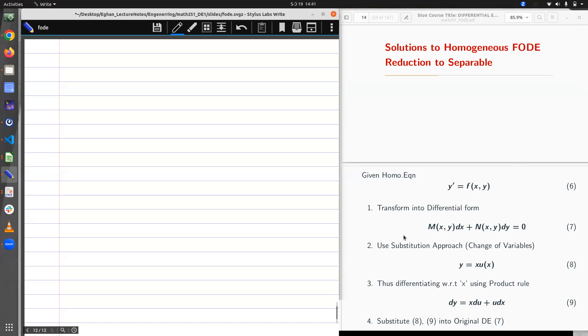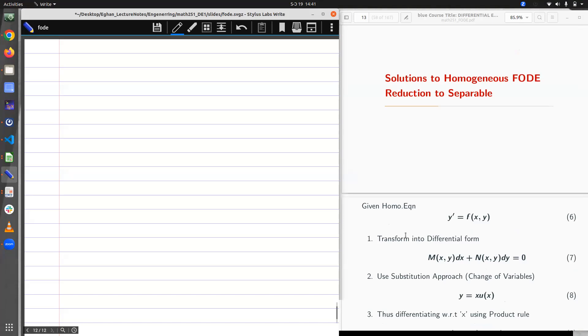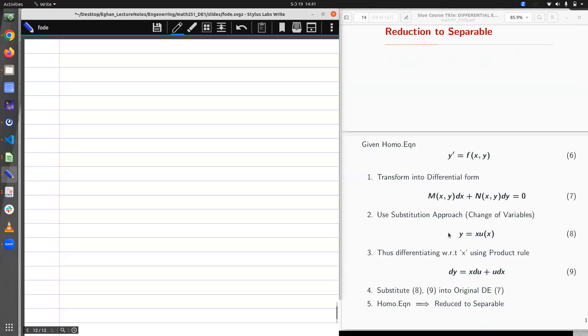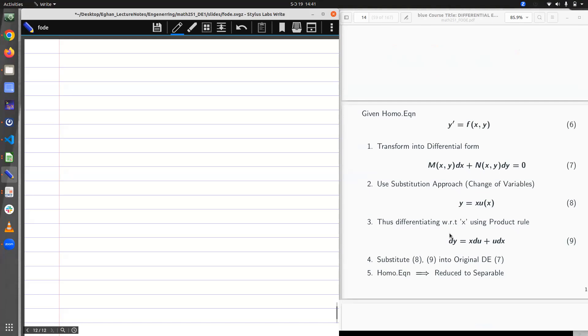We are continuing from where we left off in this next session, where we had the equation not separable but it is homogeneous, and so we first looked at homogeneous tests in the previous session. Now in this session I'm going to take you through how to make it separable, given it is homogeneous.